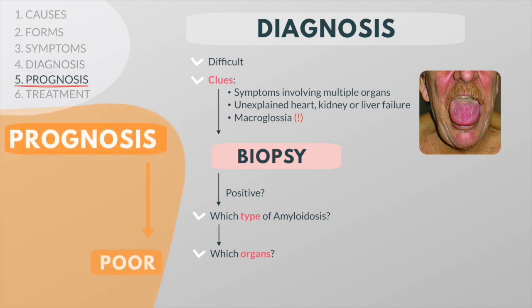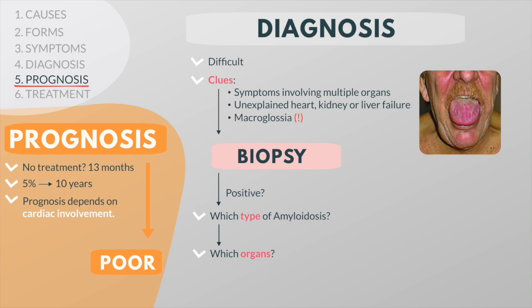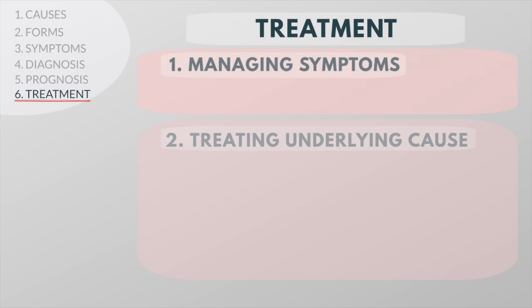Amyloidosis has a poor prognosis. The median survival without treatment is 13 months, and only about 5% of patients with primary amyloidosis survive beyond 10 years. The prognosis mainly depends on the organ system affected, and especially on the degree of cardiac involvement — cardiac involvement often results in death within about six to eight months after the onset of heart failure.